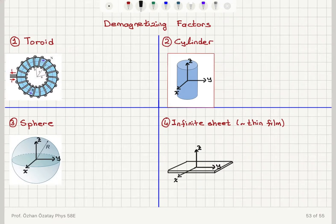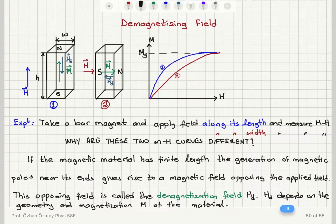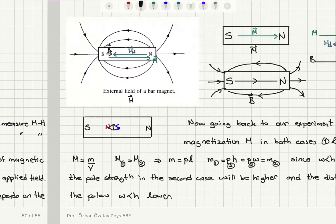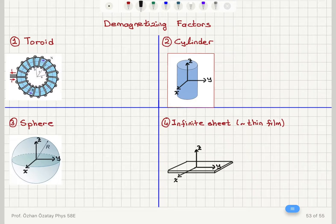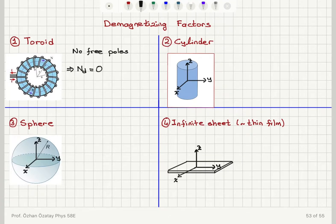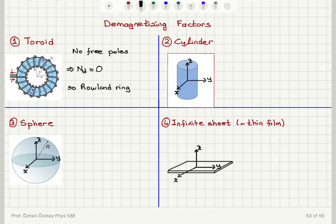In order to have a demagnetizing field, as we have seen in the previous discussion, we have to be creating free poles on the two sides of the specimen. Clearly, when we have a toroid, that's not happening. So when we have a toroid geometry, since we have no free poles, the demagnetizing field will be zero, and therefore the demagnetizing factor is zero. Remember the Rowland ring idea, where we were trying to measure the magnetic properties of samples — the geometry-dependent effects are eliminated by using the toroid. So a Rowland ring was a great idea in order to measure the magnetic induction induced inside a specimen independent of its geometry.